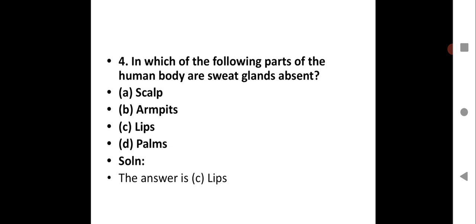Question number four - Which of the following parts of the human body are sweat glands absent? You sweat, your body sweats, all your skin surface sweats and it is a way by which the toxic harmful substances from the body are eliminated. Which part of the body where sweat glands are absent - option A scalp, option B armpits, option C lips, option D palms.